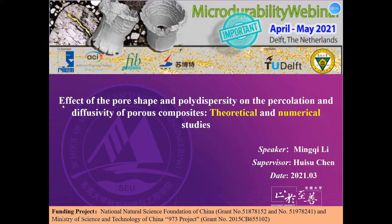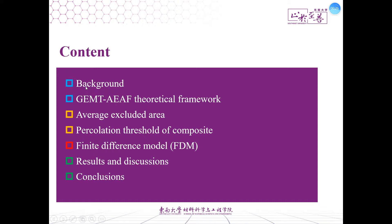Today, the topic of my presentation is the effect of the pore shape and polydispersity on the percolation threshold and diffusivity of porous composites. As shown in this picture, my presentation will include seven parts: first, the background of our research; second, a theoretical framework including generalized effective medium theory and average excluded area formula to predict diffusivity; third, how to obtain the average excluded area; fourth, the simulated percolation threshold of porous composites; fifth, the finite difference model employed to numerically study the diffusivity; and in the last two parts, we show the numerical and theoretical results and give some conclusions.